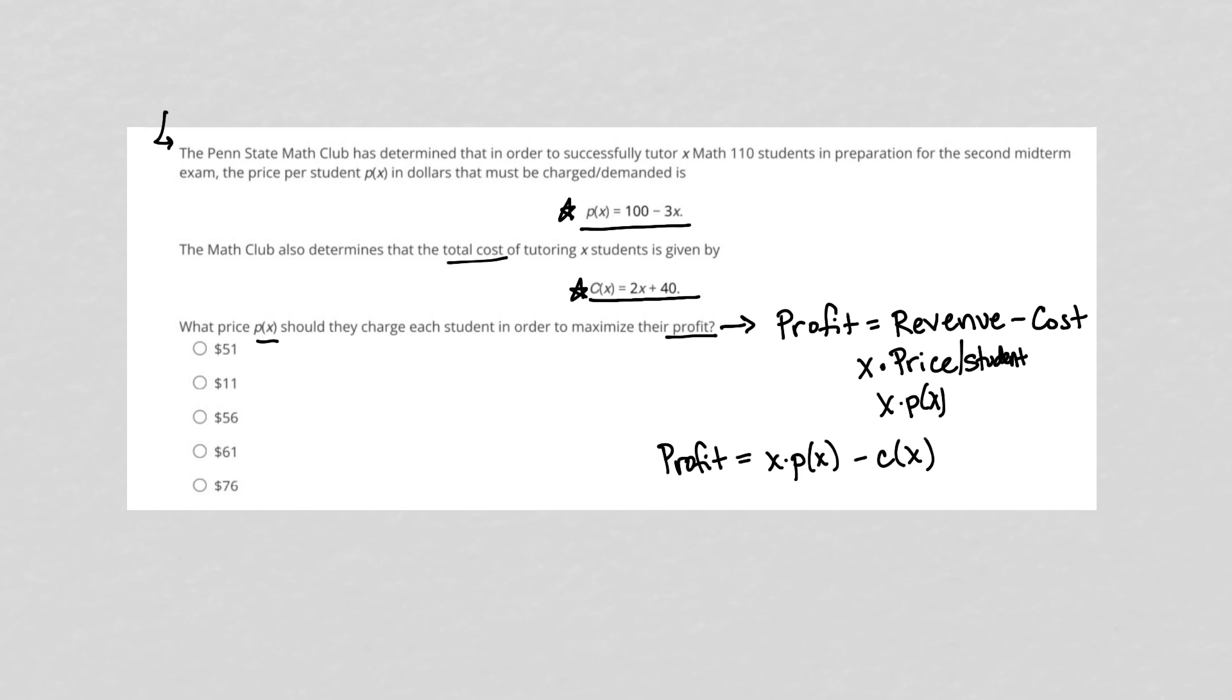So let's find that really fast. X times P of X would be X times 100 minus 3X. And then minus C of X will be minus, in fact I should put parentheses because we're subtracting. Always pay attention to that. So minus 2X plus 40, right, because that negative sign is going to distribute and impact this sign here. So I'm going to also distribute this X here. So I end up with 100X minus 3X squared. And then distributing the negative sign, I have minus 2X and minus 40.